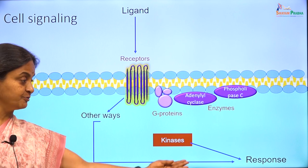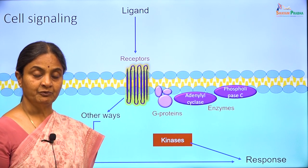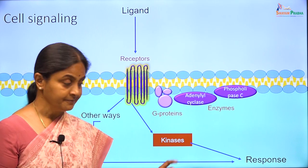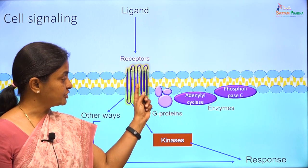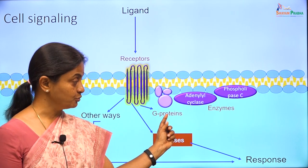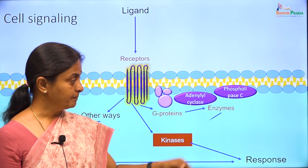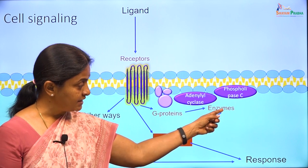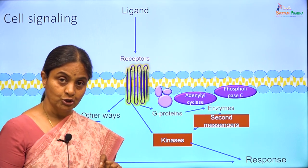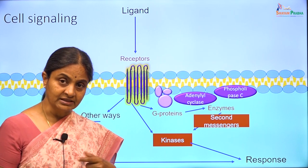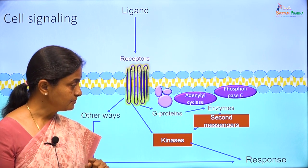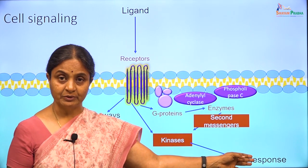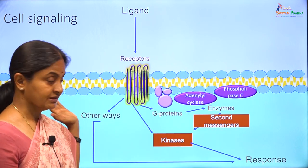There are other ways in which the response can be brought about without involving kinases. But when it comes to involving kinases, the ligand-receptor combination may activate these kinases directly, or the ligand-receptor complex would activate a G protein. The G protein would activate a membrane enzyme, and the membrane enzyme would activate the kinase within the cytoplasm, usually through another signalling molecule called the second messenger.